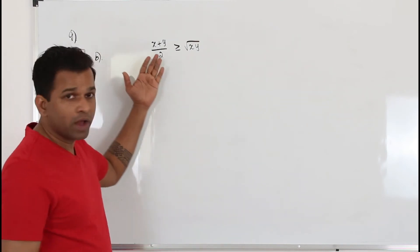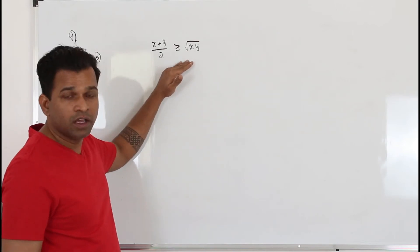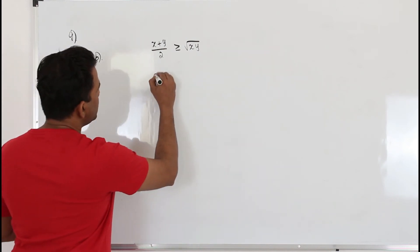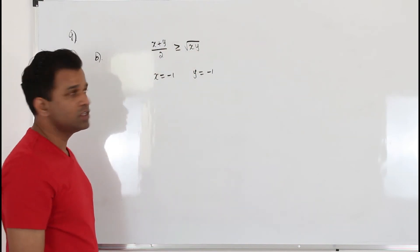So you are allowed to use any two real number values for x and y. Up to you. Just put two values and see what happens. If you can't prove this is wrong, try for some other value. So I'm gonna start with the simple value. I'm gonna put x is negative 1, y is negative 1 here on both sides of this inequality.